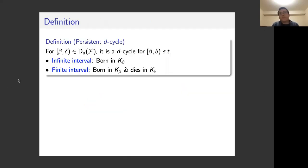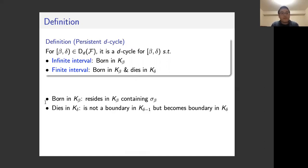For an interval beta-delta from the D's persistent diagram, the persistent cycle for this interval is a D-cycle such that: if this interval is an infinite interval, then this cycle should be born in K_beta; if this interval is a finite interval, then this cycle should be born in K_beta and die in K_delta. A cycle is born in K_beta if it resides in K_beta and contains sigma_beta, meaning it is not residing in K_{beta minus one}. A cycle dies in K_delta if it's not a boundary in K_{delta minus one} but becomes a boundary in K_delta.